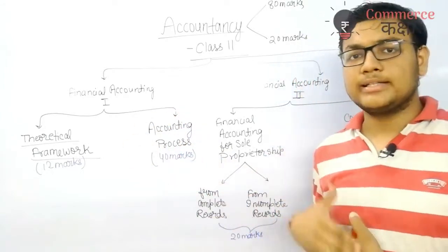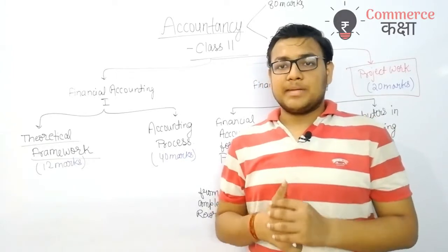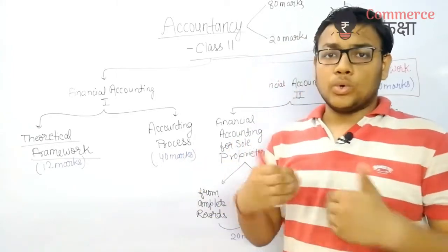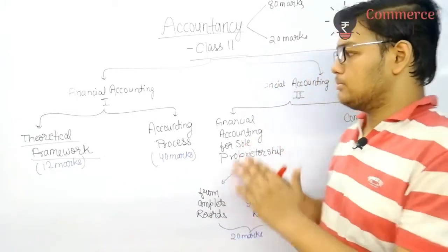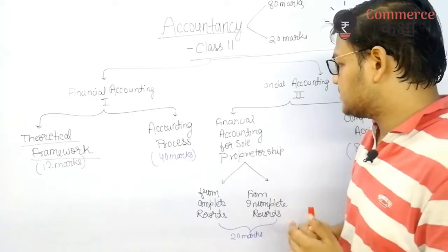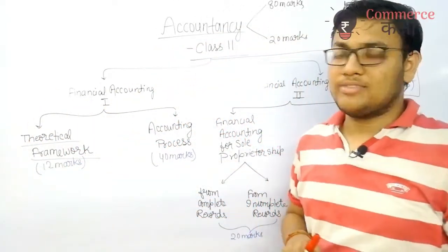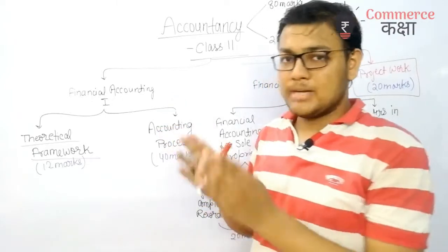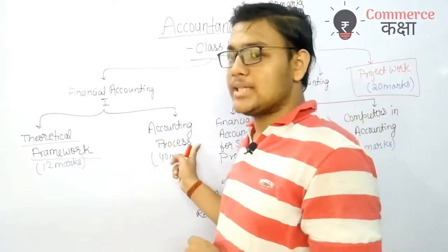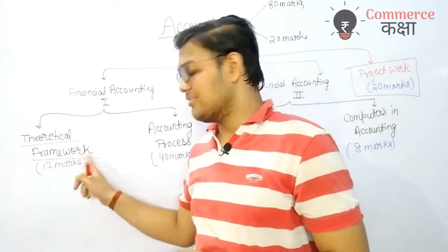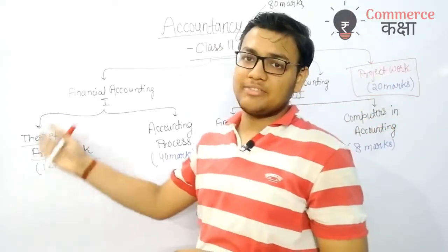We will study journal entry, ledger accounts, and trial balance. It is possible that what I am talking about is not clear now, but over time you will develop a good understanding of all these things. This is an introduction to accounts — the introductory portion — which has a total weightage of 52 marks: 40 marks for accounting process and 12 marks for the theoretical framework. Overall, 52 marks are weighted for Financial Accounting Part 1.